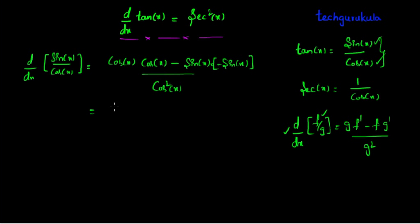Now, we can rewrite this as cos square of x minus, we'll have plus here because the minus minus becomes plus, sin square of x divided by cos square of x. And we can write this as 1 over cos square of x.